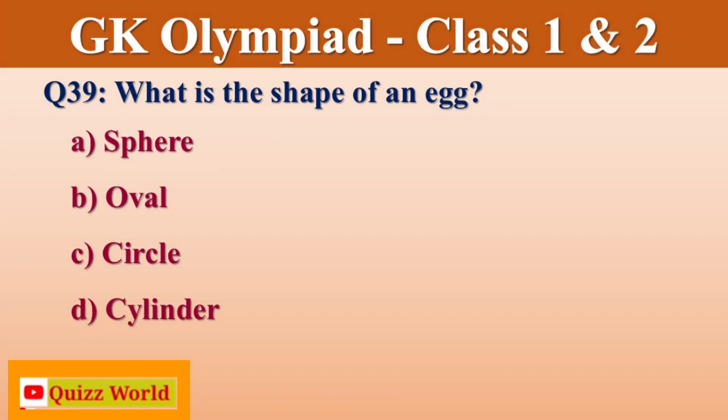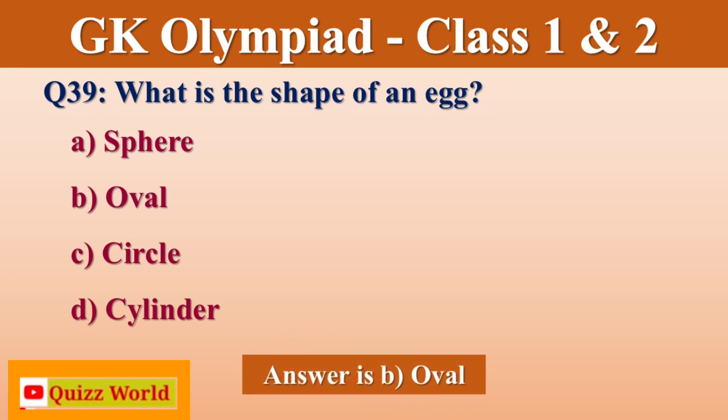What is the shape of an egg? Square, Oval, Circle, Cylinder. Right answer is Oval.